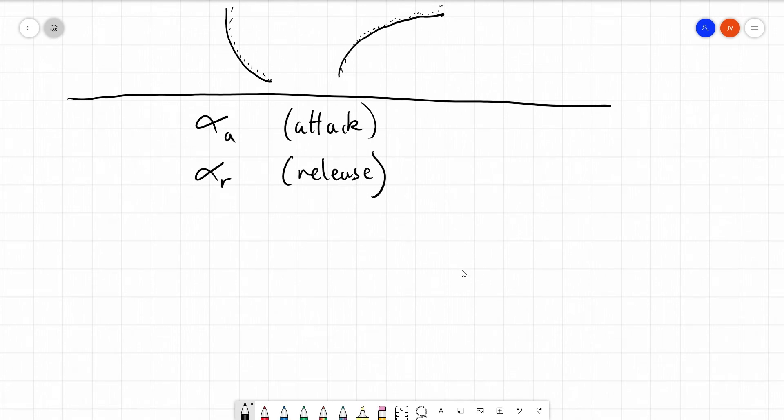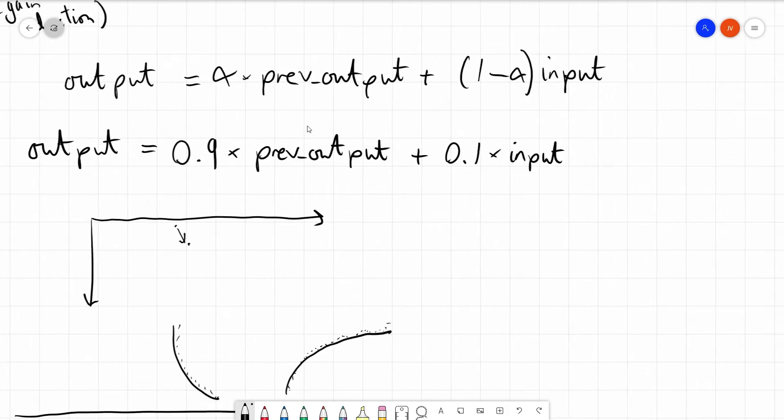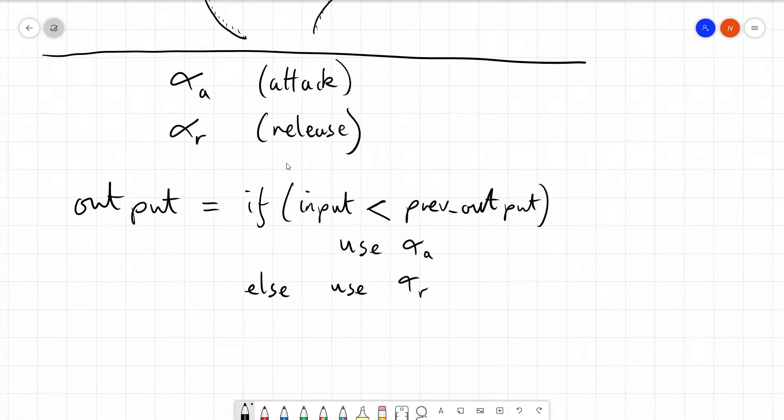And in a coupled detector, we say if the input is smaller than the previous output, then we use the attack alpha. Otherwise, we use the release alpha with the same equation. And in the coupled detector, the previous output value is shared. So all we're doing is we're kind of branching between these attack and release times, depending on whether we're attacking or releasing.